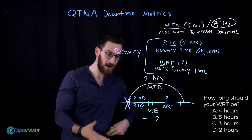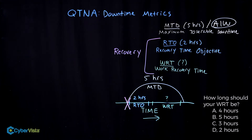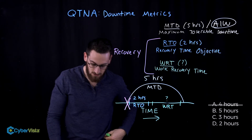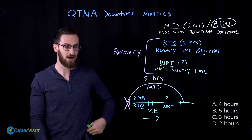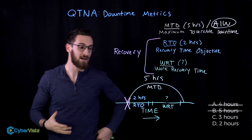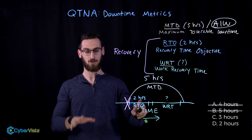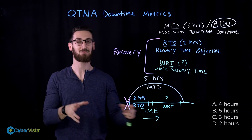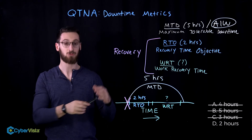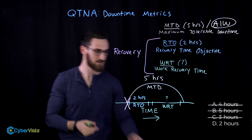If our WRT is four hours, four plus two is six — that's not good. If our WRT were five hours, five plus two is seven — even worse. We've got to be faster than that. If our WRT were three hours, three plus two is five — that's the same as our MTD, but that's not a lot of room for error. So if our WRT were two hours, two plus two is four — that's perfect.